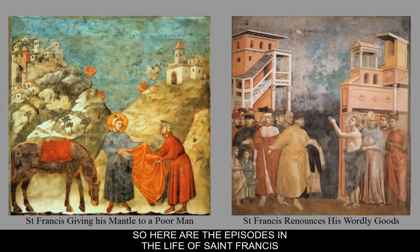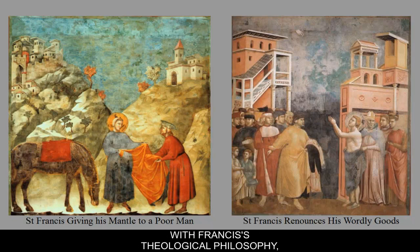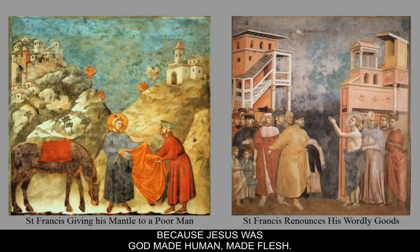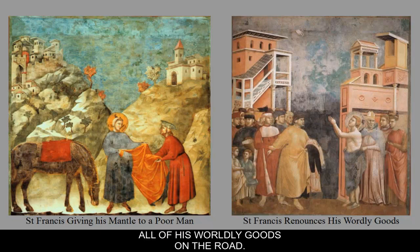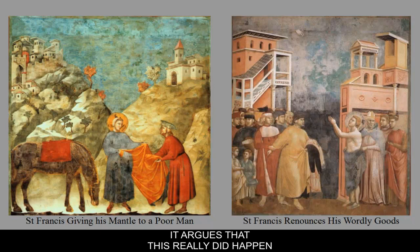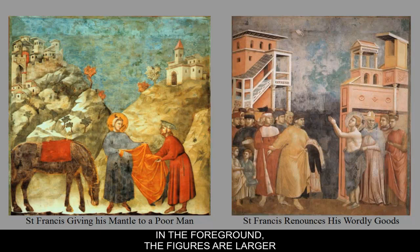In the episodes of the life of St. Francis, Giotto humanizes Francis — he's a real person — which fits with Francis's theological philosophy that one should emulate the life of Jesus because Jesus was God made human, made flesh. On the left-hand side, St. Francis is giving away all of his worldly goods on the road. Notably, the figures in the foreground are larger than the landscape and buildings in the background — exactly how we actually see things — with a sense of sky and horizon line in those mountains.